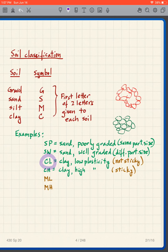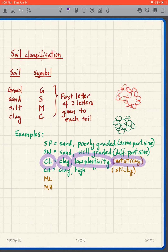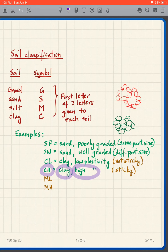CL stands for clay low plasticity — in a generic sense it means the clay is not very sticky. CH stands for clay high plasticity, meaning it is sticky. Similarly, ML is silt low plasticity and MH is silt high plasticity. We'll put actual numbers on these distinctions in the laboratory; for now this is just a general overview.